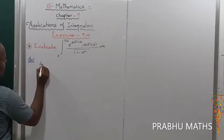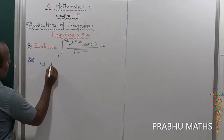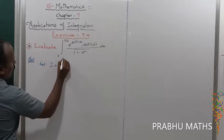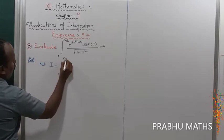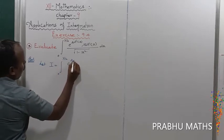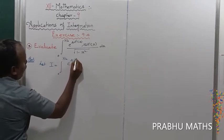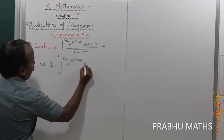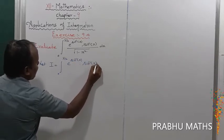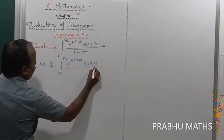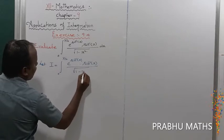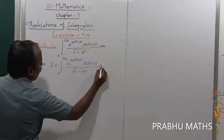Let us consider the given integral value is I, so I equals the integral from 0 to 1 by root 2 of e to the power of sin inverse x, multiplied by sin inverse x, divided by root of 1 minus x squared, into dx.